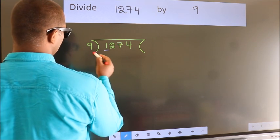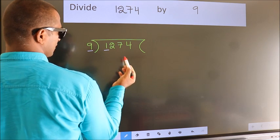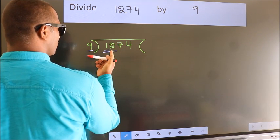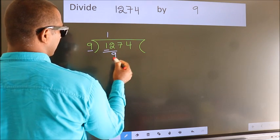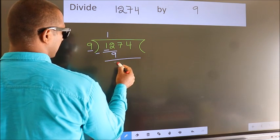Here we have 1. Here 9. 1 is smaller than 9, so we should take 2 numbers: 12. A number close to 12 in the 9 times table is 9 once 9. Now we should subtract. We get 3.